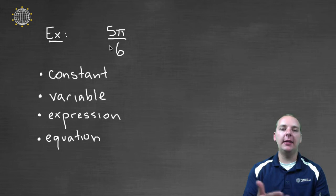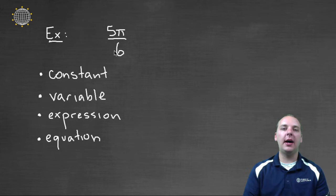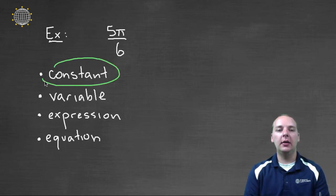Next we have 5π divided by 6. Pi is a symbol, but remember pi is not a variable - pi is a defined number that never changes. Three point one four, one five nine, two six, five three five, and it continues to go on forever without stopping. That means it doesn't have any variable terms, this is simply a constant.